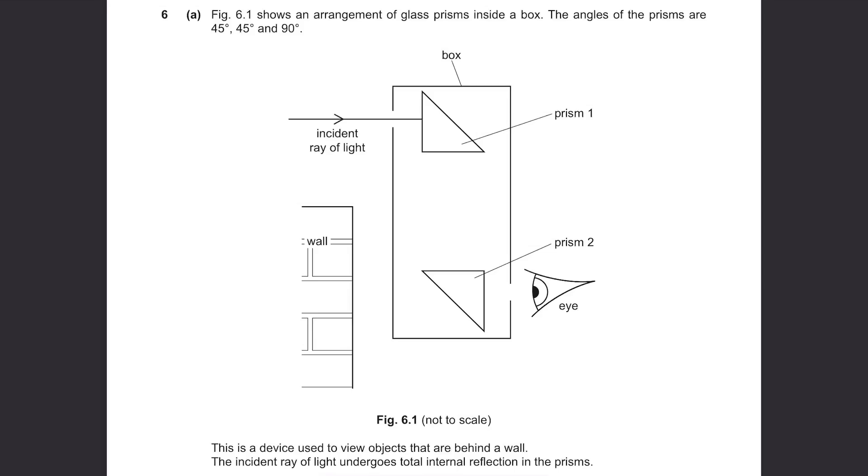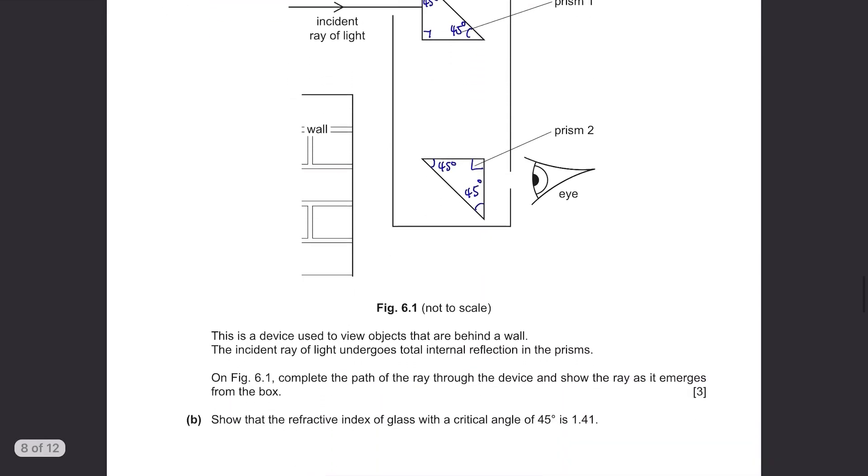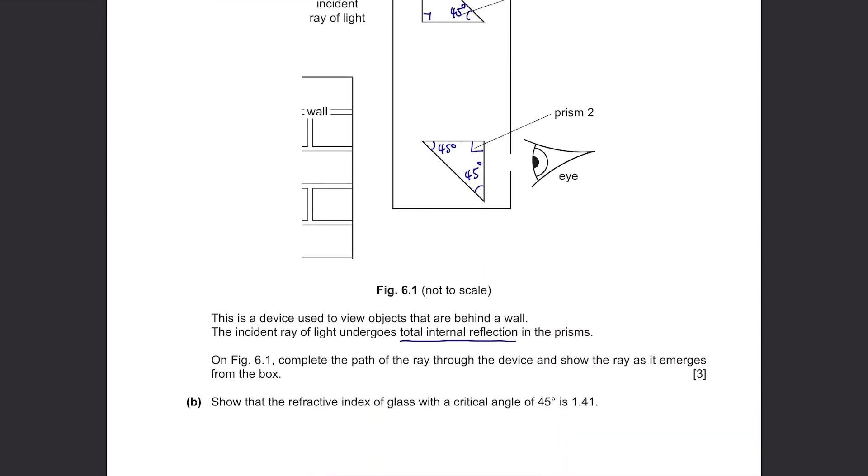Figure 6.1 shows an arrangement of glass prisms inside a box. The angles of the prisms are 45 degrees, 45 degrees and 90 degrees. This is a device used to view objects that are behind a wall. The incident ray of light undergoes total internal reflection in the prisms.